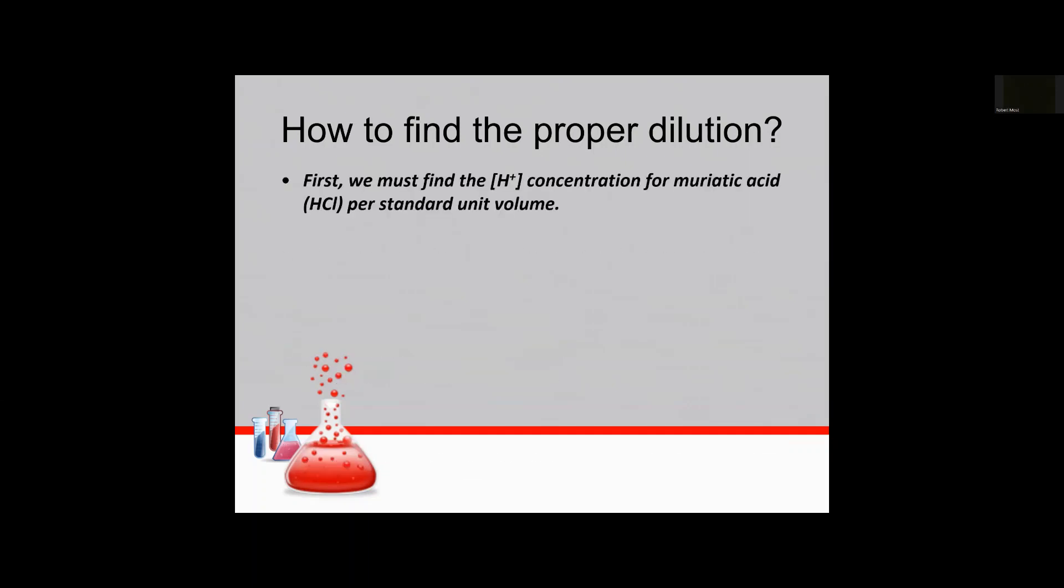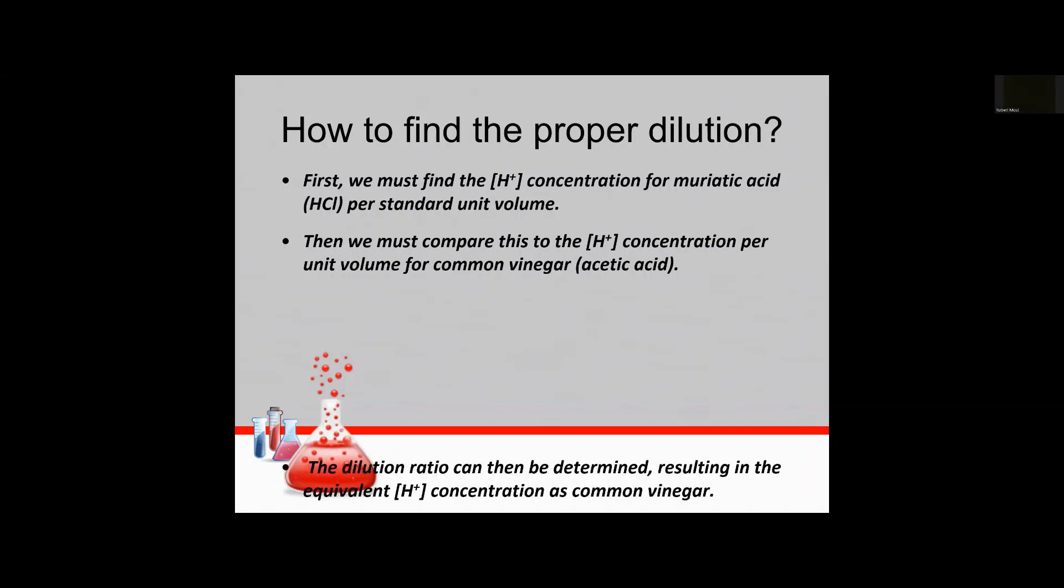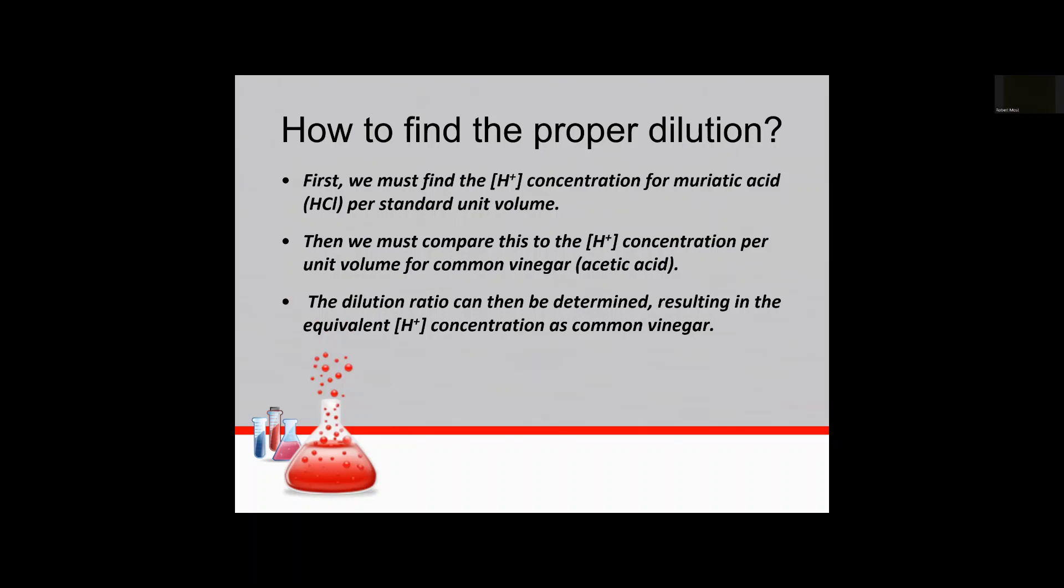So to find this proper dilution a couple things we have to do. The first calculation is to find the hydrogen ion concentration for muriatic acid otherwise known as HCl per standard unit volume. We're going to do the same thing then for the hydrogen ion concentration for common vinegar and once we have those two we can develop a ratio. So that way we know how much muriatic acid we need to dilute with water to get the equivalent concentration as common vinegar.